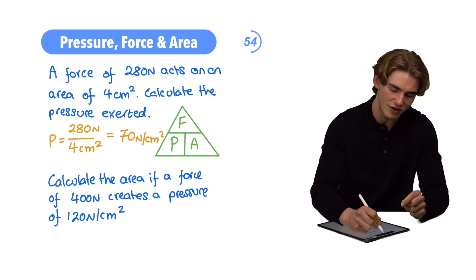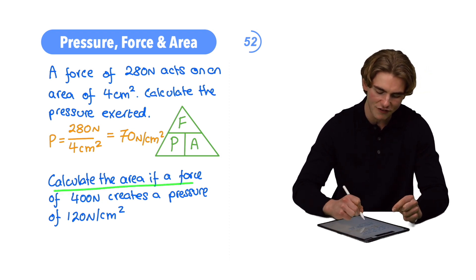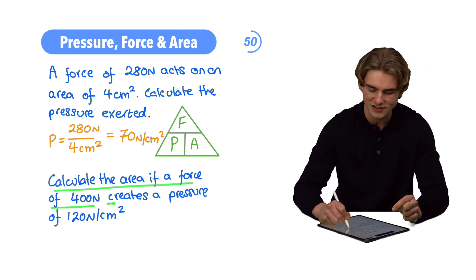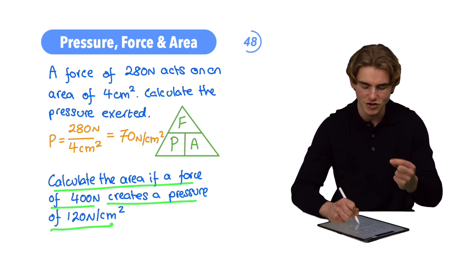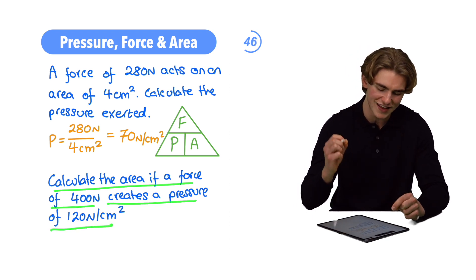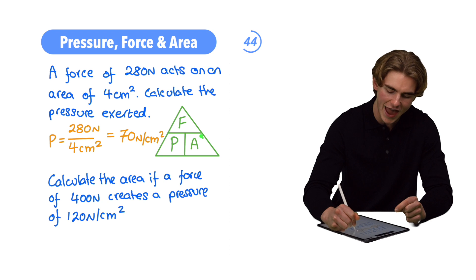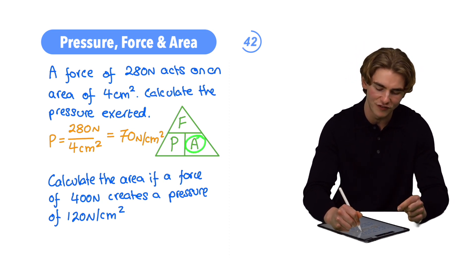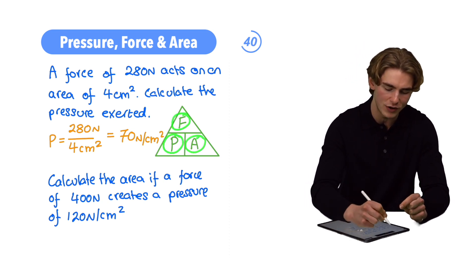That's our units. Next, let's have a look at this question. Calculate the area if a force of 400 Newtons creates a pressure of 120 Newtons per centimeter squared. What are we going to do this time? We want to calculate our area, so we're going to do our force divided by our pressure.